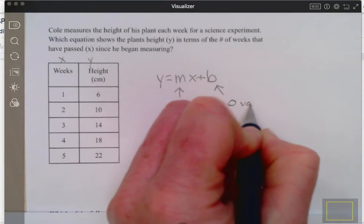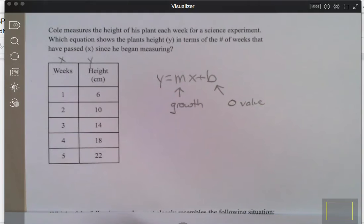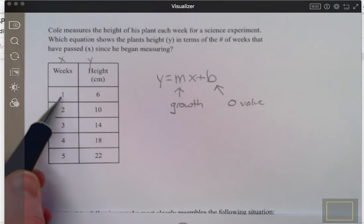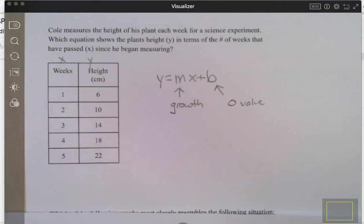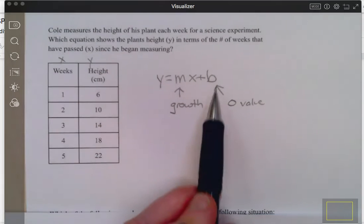Okay, or when you began at time zero. So I need to figure out what time zero would be, right? If I went back a week, how tall was the plant? And that's going to be your B value.